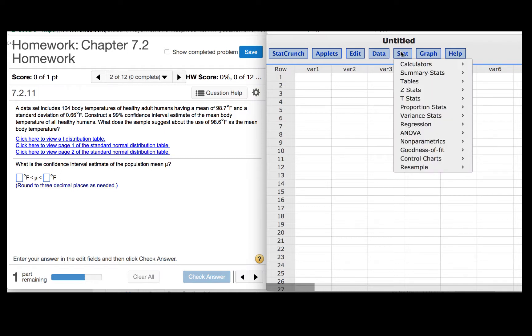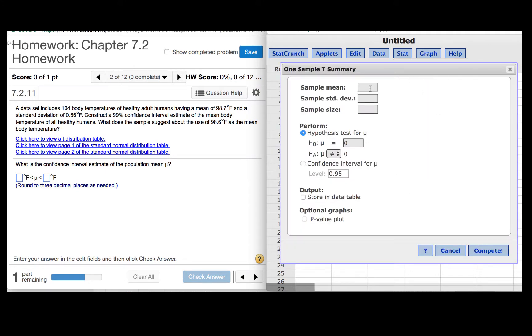Click stat, t-stats, one sample with summary. The sample mean is 98.7, the sample standard deviation is 0.66, and the sample size is 104.